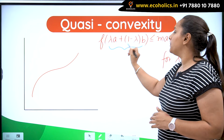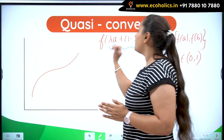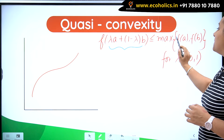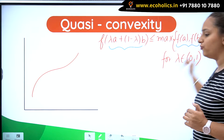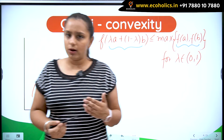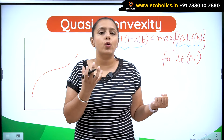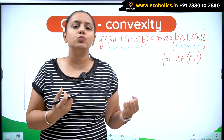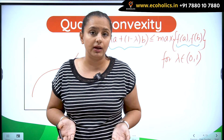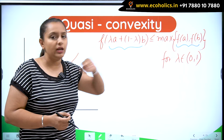So λa + (1 − λ)b gives you a point between a and b. The functional value at that point has to be less than the maximum value out of f(a) and f(b). This is the reverse of quasi-concavity — in quasi-concavity, the value at the midpoint had to be greater than the minimum, whereas here the value at the midpoint has to be less than the maximum of f(a) and f(b).